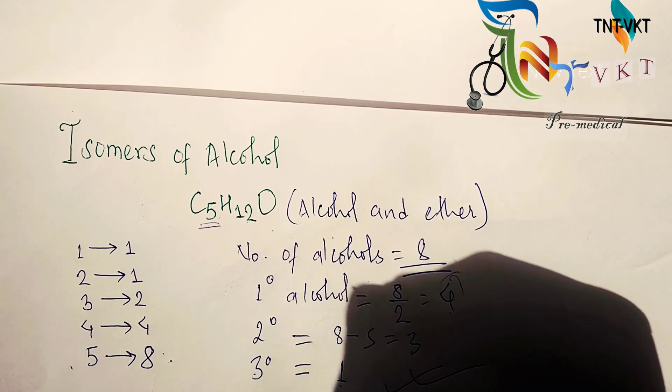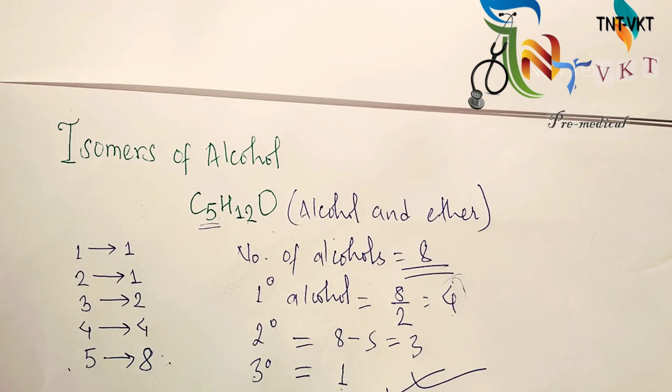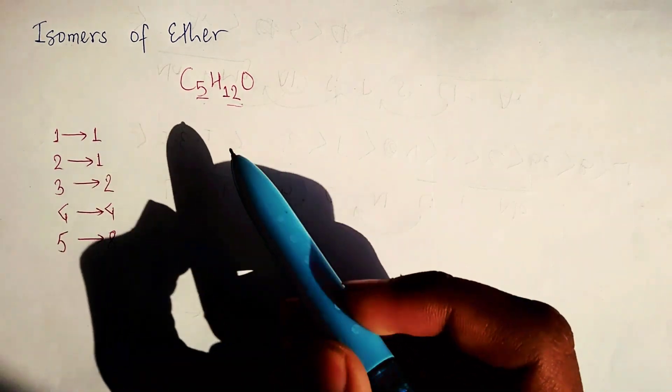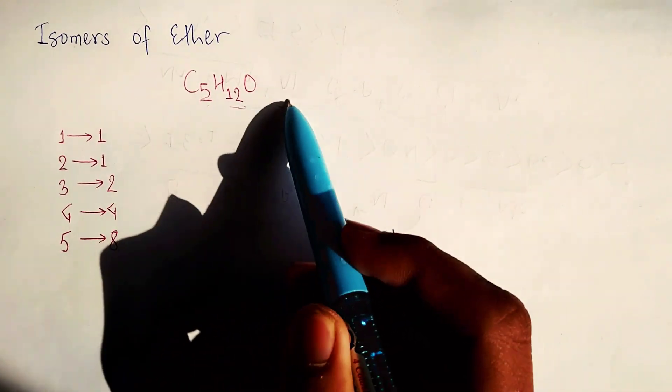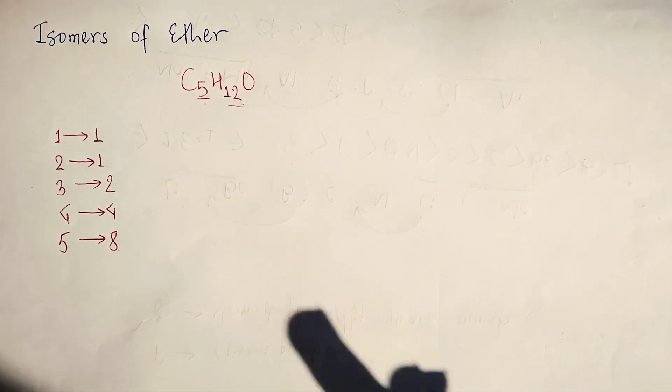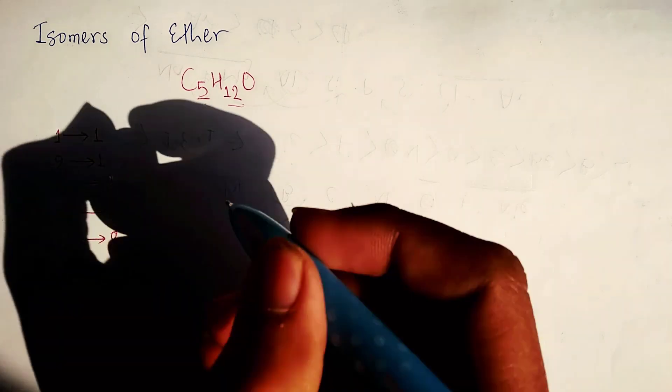Now we are going to find the isomers of ether. The question is the same: C₅H₁₂O. The general formula is the same for alcohol and ether: 1→1, 2→1, 3→2, 4→4, 5→8. But the use of formula is different. In alcohol we put value of 5 as 8 and found the isomers, but in case of ether, the use of formula is in different places.